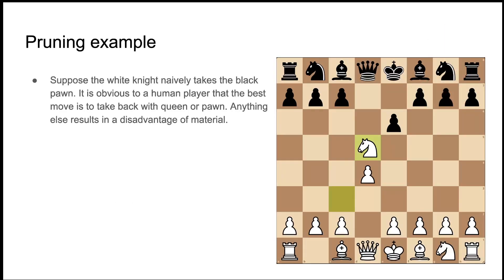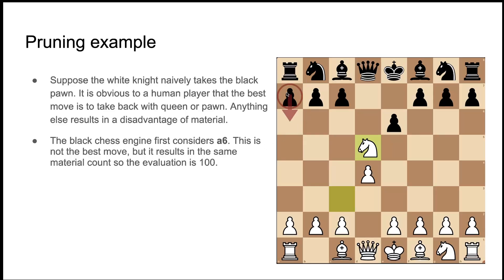So let's look at this pruning example. And we're continuing the example from the previous slide. And we're supposing that the white knight naively took that pawn, knowing, or it was unaware that it was going to get recaptured by the queen or the pawn. And now we're in the position of black evaluating the next move. So black starts by evaluating this pawn. And obviously this is not the best move because it's not recapturing the knight, but the chess engine doesn't know that yet. So it evaluates this move a6. So the a pawn is moving to the sixth rank.